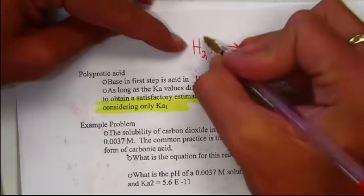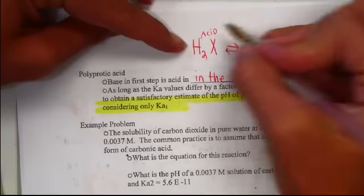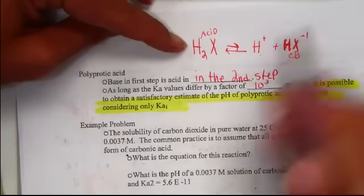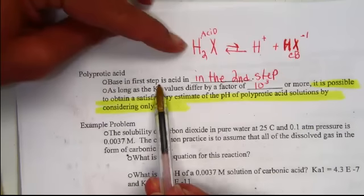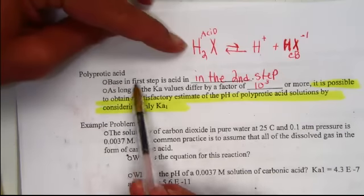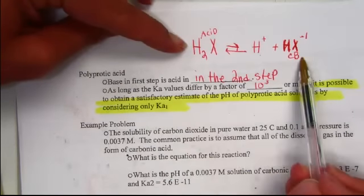Now remember, if this is the acid, this is its conjugate base. In the first ionization step, we produce a base. This base then, in the next progression,